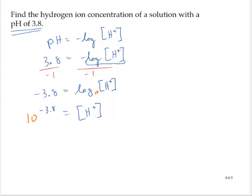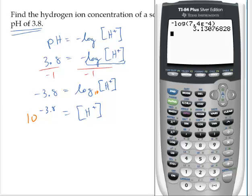And let's calculate that. So 10 raised to the negative 3.8 power is 1.58 times 10 to the negative 4. Notice that's scientific notation, and the E represents times 10 raised to the power.